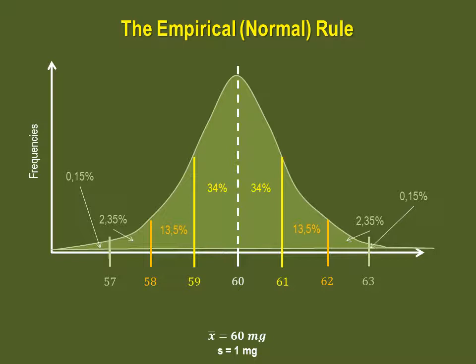Based on the empirical rule, you have a 50% probability of getting a coffee with a caffeine content of 60mg and higher, a 2.5% chance of getting coffee with a caffeine content higher than 62mg, and a 13.5% probability of getting a coffee with a caffeine content between 58 and 59mg.